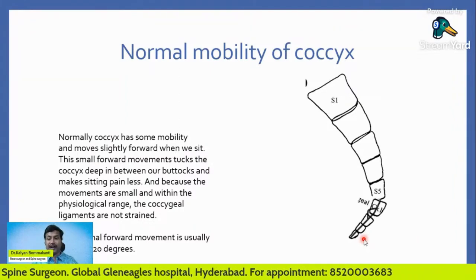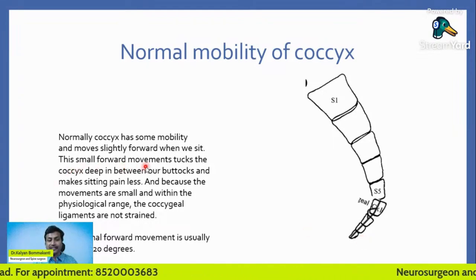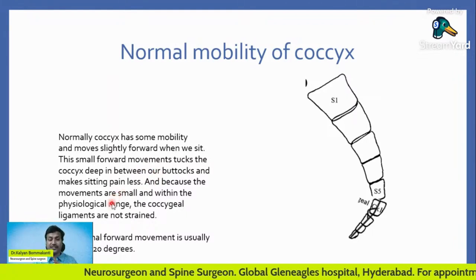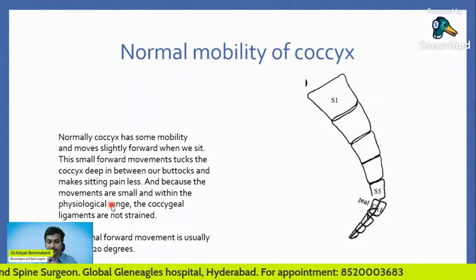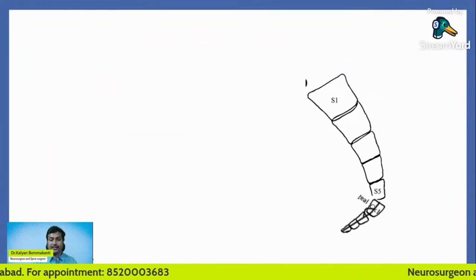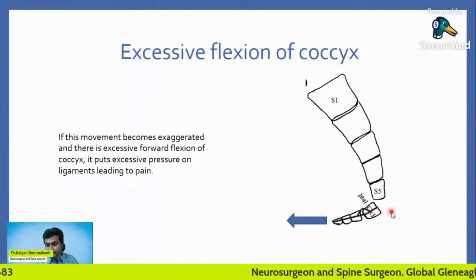Why has this slight movement been given to our coccyx? This small forward movement tucks the coccyx deep between our buttocks and makes it painless. Because the movements are small and within the physiological range, the coccyx ligaments are adapted to this small movement and are not strained by it. Physiologically, this normal movement is less than 20 degrees.